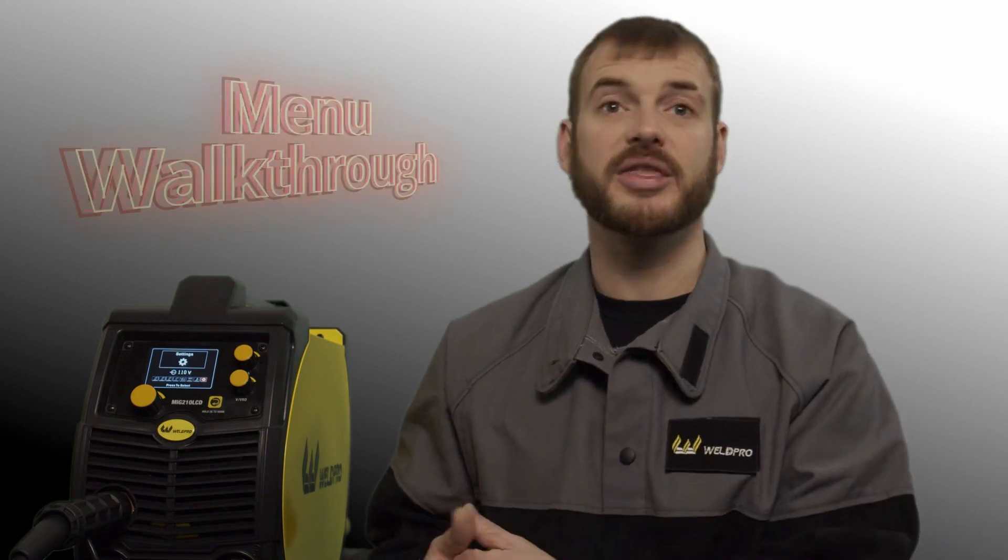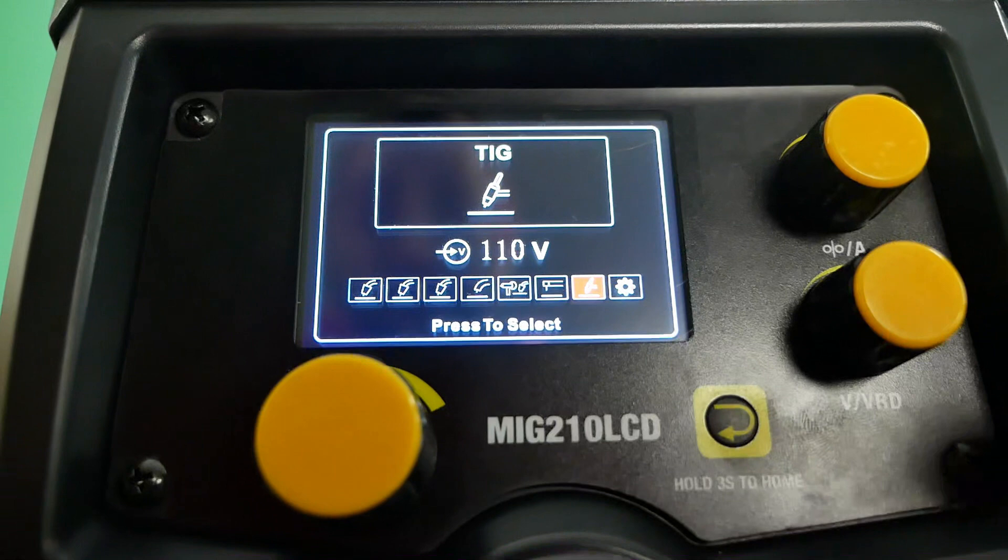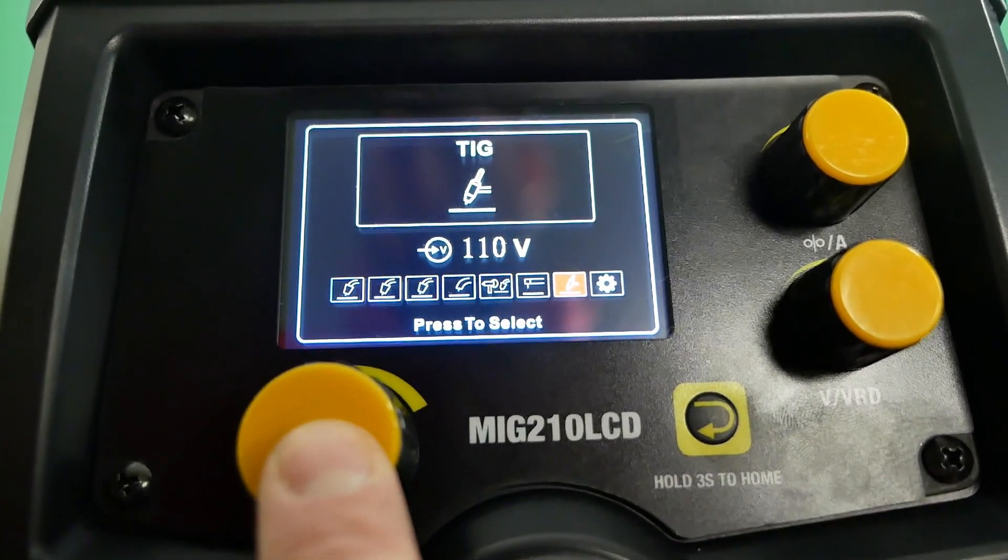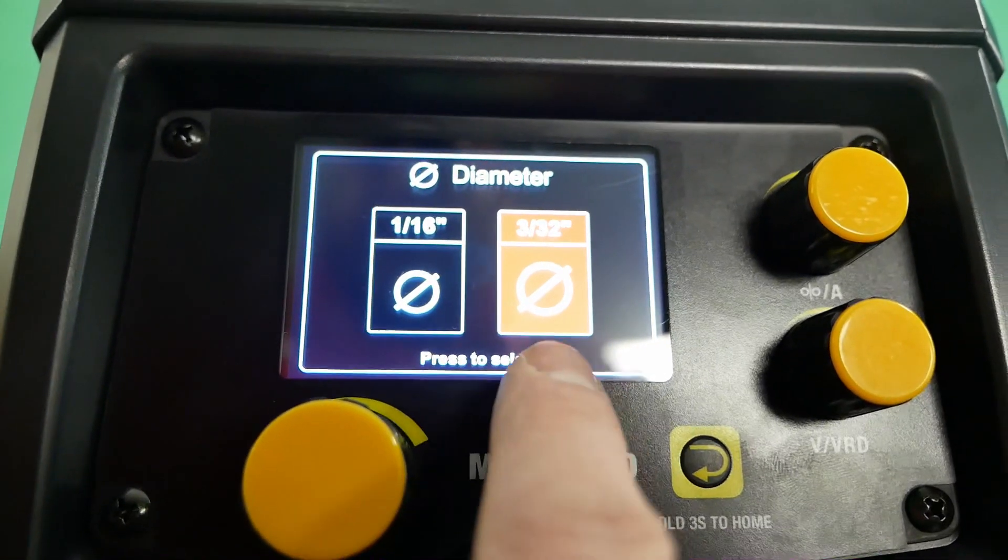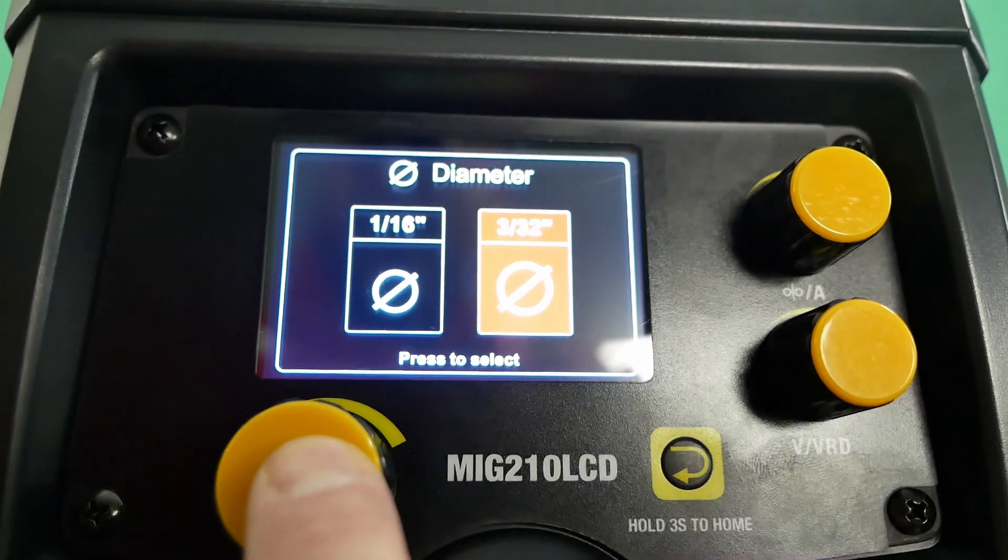Before we assemble the torch components let's walk through the menu on the 210 and adjust the TIG options. When entering the TIG setup mode in the menu you'll be reminded to run 100% argon. You'll then be prompted for an electrode diameter. This is the size of your tungsten, whether you're using 1/16th or 3/32nds tungsten. The tungsten that's included with the 210 package will be a 3/32nds size.